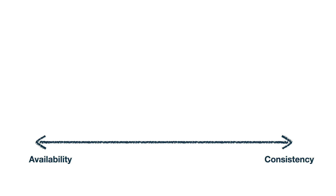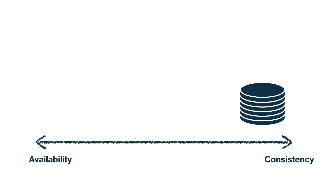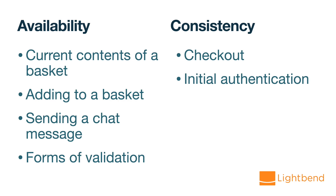With this type of architecture you can decide when availability or consistency is more important for a feature. Anything we do directly with the database, without even thinking about it, we're picking on the high consistency side. That's good because it's easy to reason about, but often we want large parts of our application to continue working even if the database is non-responsive. For example, getting the current contents of a shopping basket shouldn't need to go to the database, because we want that to be available even if our database is down and maybe half of our nodes are down. Not being available likely means your customer will go to a different site. But for features like checking out or initial authentication, that's where we might want to pick consistency.